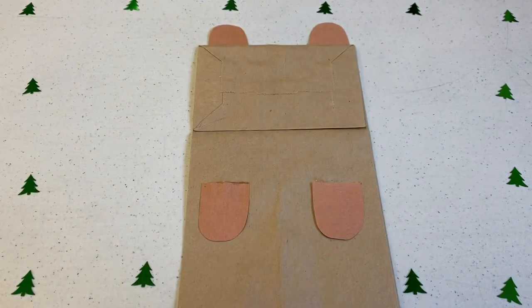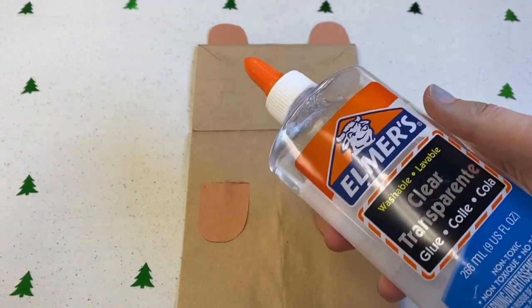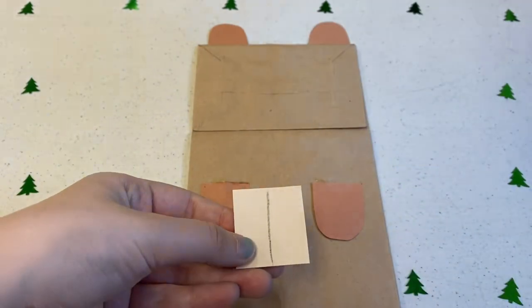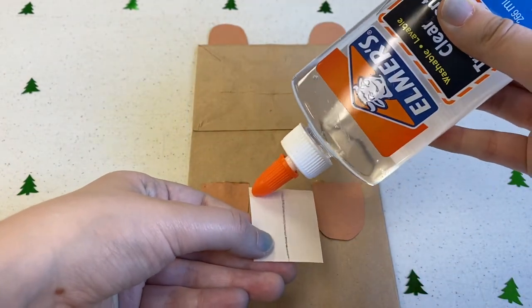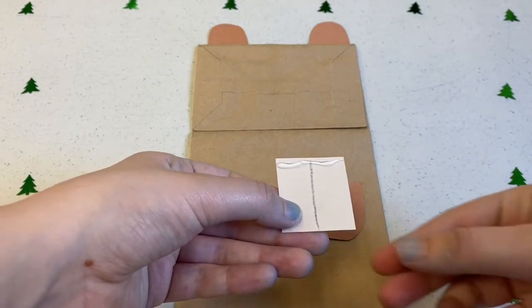We'll be gluing the teeth to the inside flap of the bag. Make sure not to use too much glue because this will be your puppet's mouth and we don't want it getting glued shut.